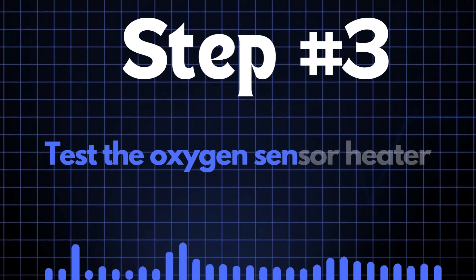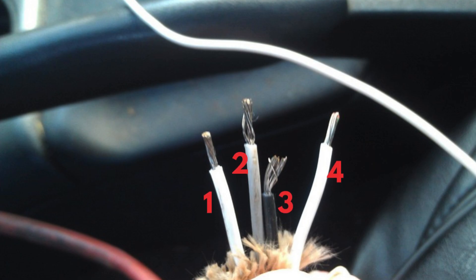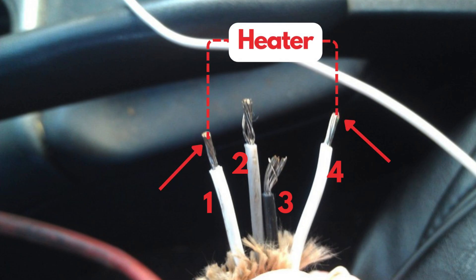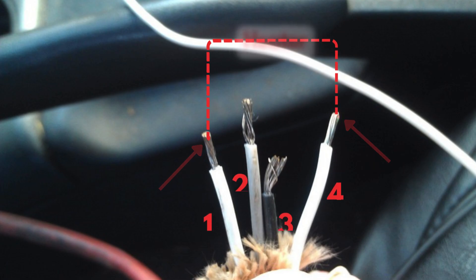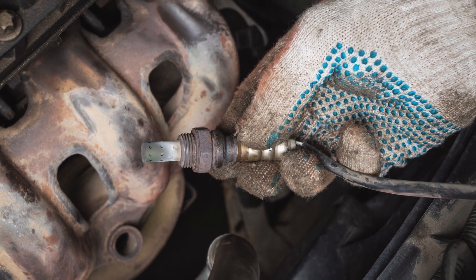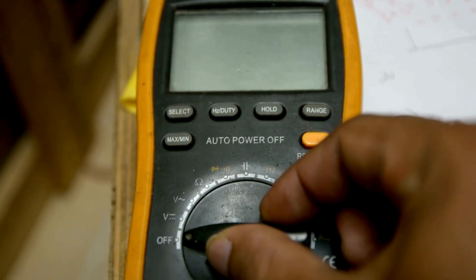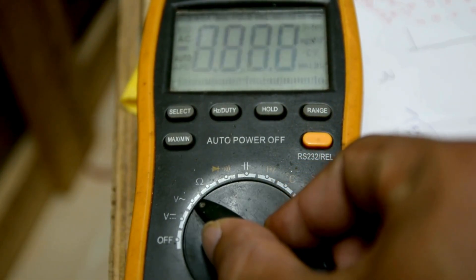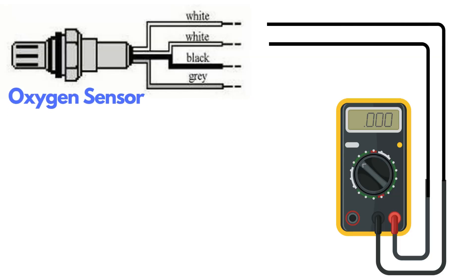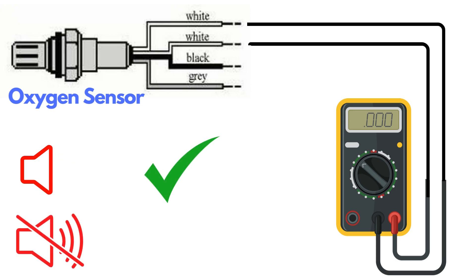Step 3: Test the oxygen sensor heater. Oxygen sensors typically have four wires. Two of these wires, usually of the same color, are dedicated to the heater circuit within the sensor. Over time, the heater circuit can burn out and stop functioning properly. To test the heater circuit, you'll need a multimeter. Set the multimeter to check for continuity, then place the probes on the two heater wires. If the circuit has continuity, the multimeter will beep, indicating that the heater is functioning. If there's no beep, it means the heater circuit is broken and you'll need to replace the oxygen sensor.